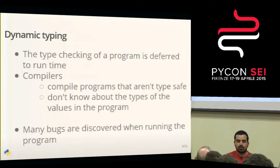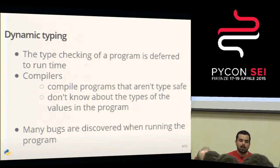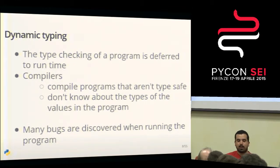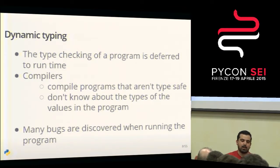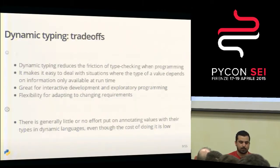In dynamic typing, the type checking or the legal operation checking is deferred to run time. Compilers don't have much information about the types of your programs - they don't know anything about the types. So many bugs hit the run time and you get runtime errors instead of compile time errors.